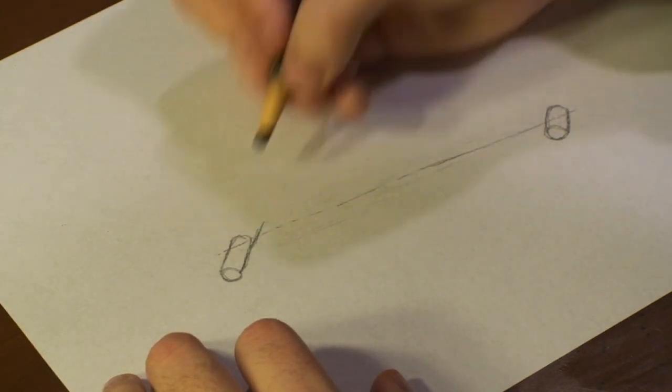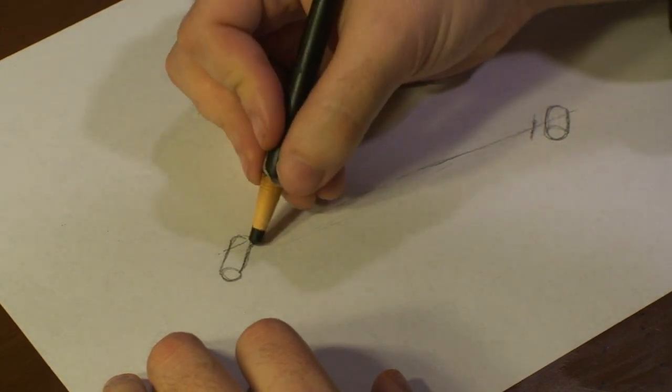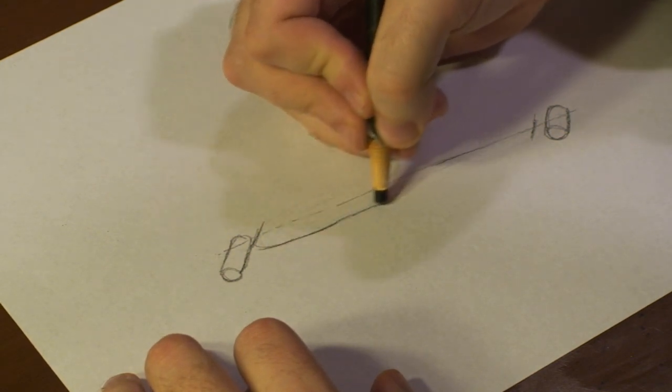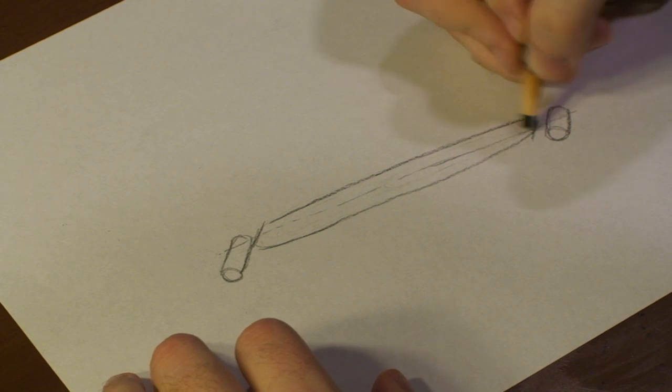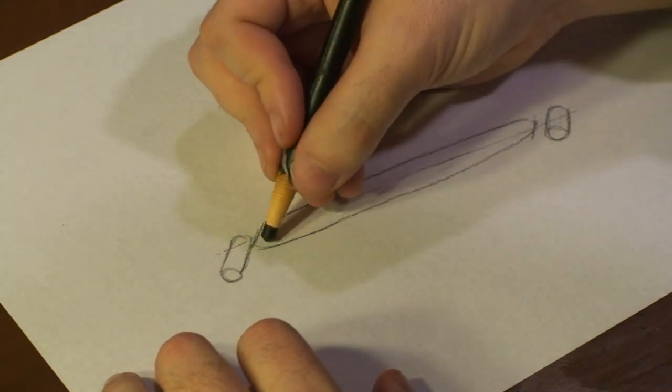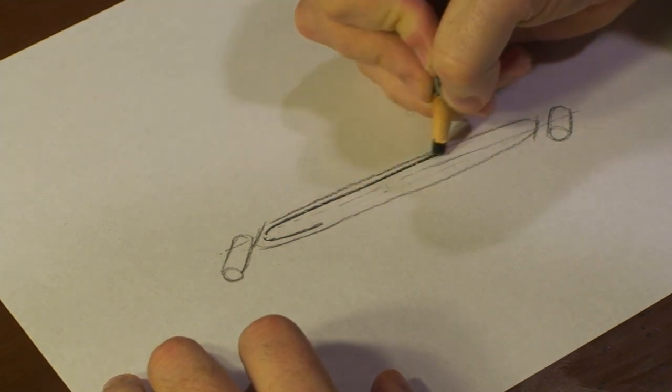Once you have that, you're going to draw a cross right here, cross right there, and you're going to draw a loop, and you're going to draw another loop inside of it, like so.